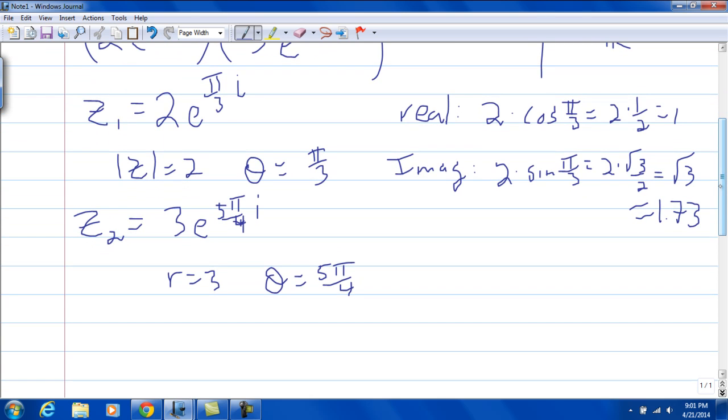The second one, for the real, it's going to be, I should call that the magnitude of z, 3 times cosine of 5 pi over 4.